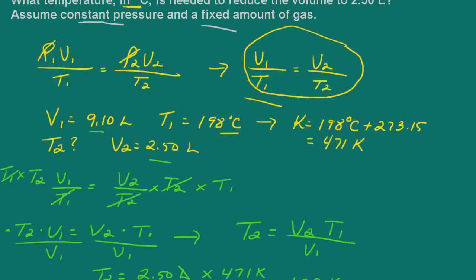So here we use the combined gas law, but it reduced to this here because the pressure and the amount of gas was constant. So this would be an example of Charles's law, where we relate volume and temperature.